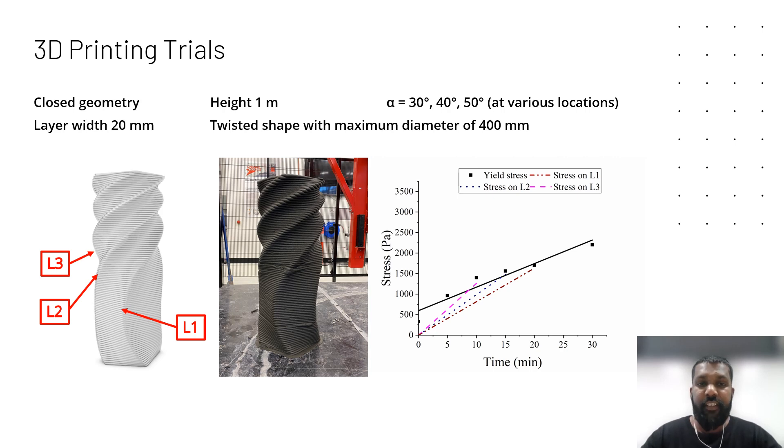In a similar way, we designed our fourth and final design with a twisted shape. Here we had multiple overhanging angles at different locations of the design. As in the rightmost side diagram, at all three locations taken for analysis, the dashed lines that indicate the applied stress are always below the straight line that indicates the yield stress. We printed this up to one meter as well with 10 millimeter layer height and 100 layers.